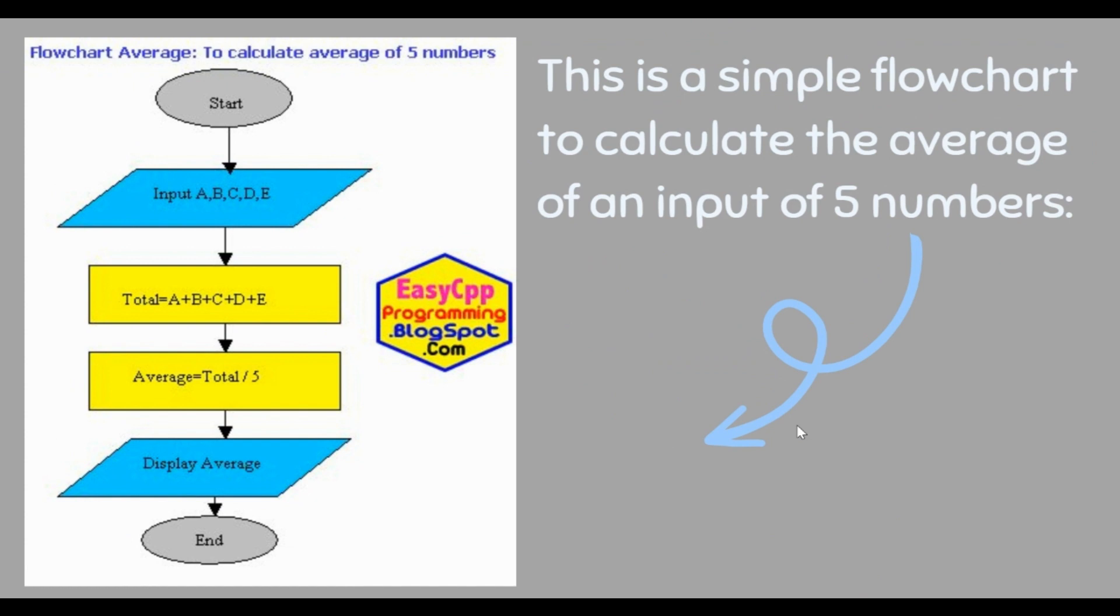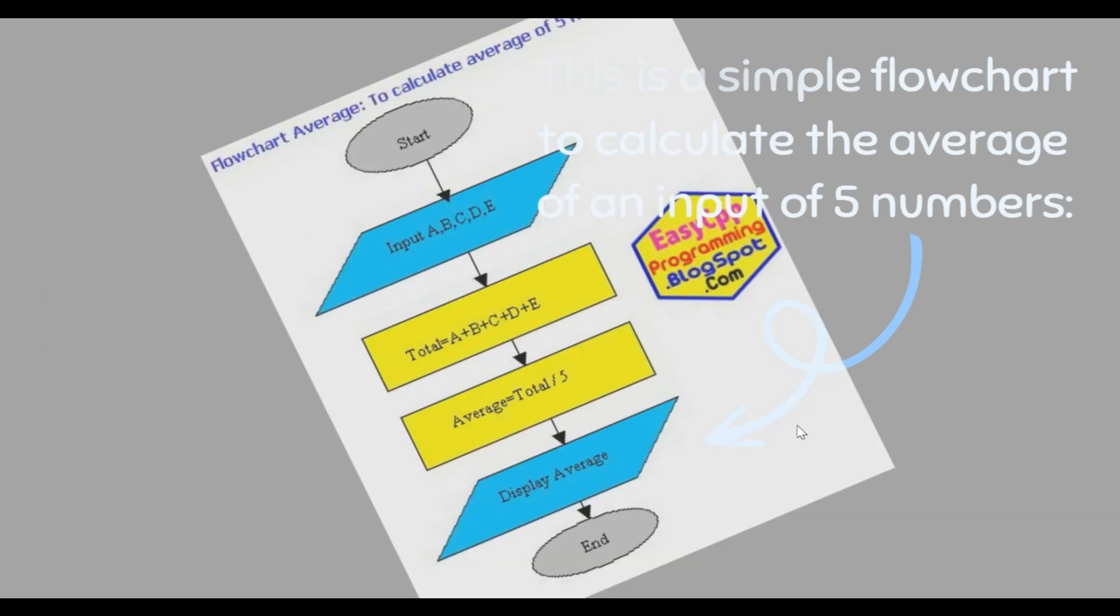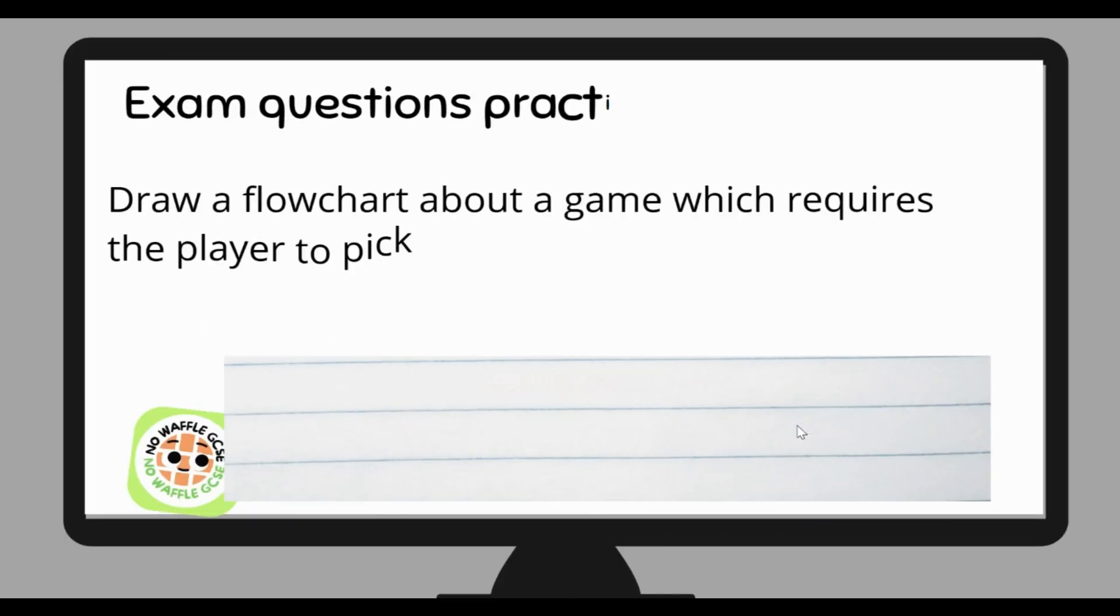This is a simple flowchart to calculate the average of an input of five different numbers. You start, you ask the user to input five different numbers labeled A, B, C, D, and E. You then undergo the process of adding those numbers together. You then undergo the process of averaging them, which just means dividing them by five. Then you've got your output which is displaying the average, and then your end.